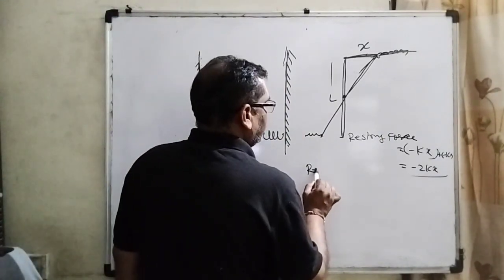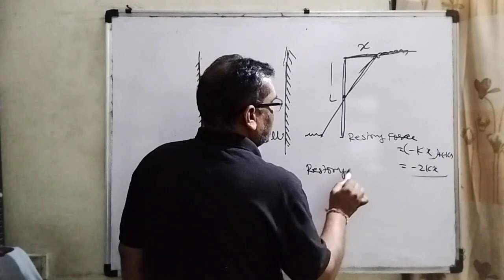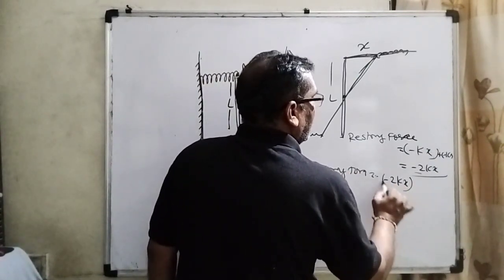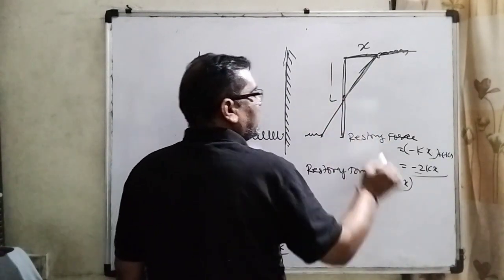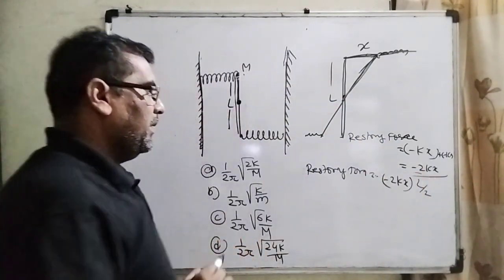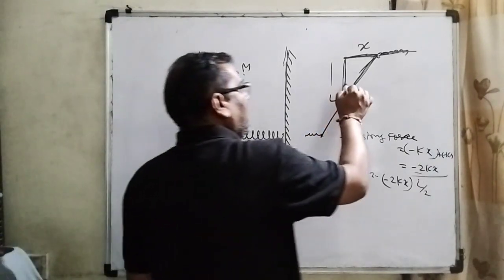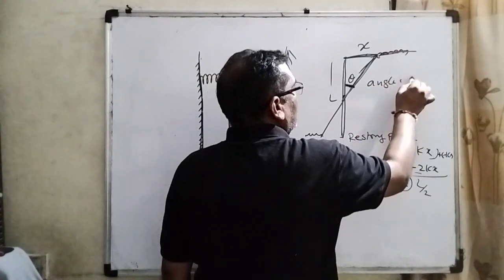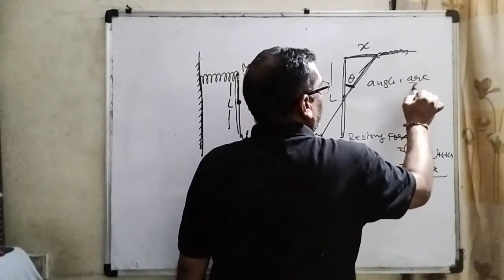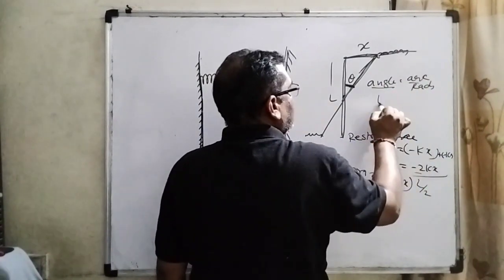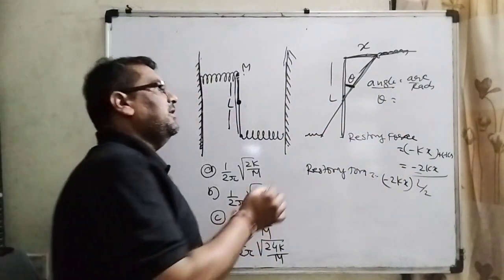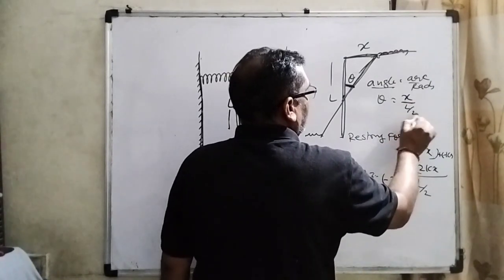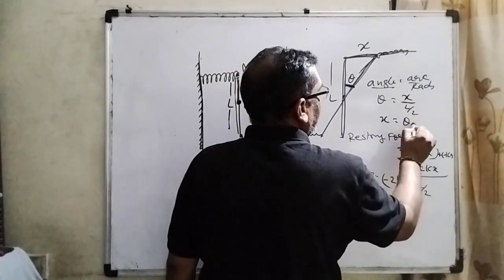The restoring torque equals the restoring force multiplied by the distance from the center, which is L/2. Here, angle theta equals arc divided by radius. The arc is x and the radius is L/2, so x can be written as theta × (L/2).